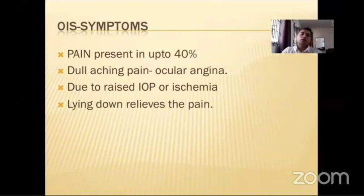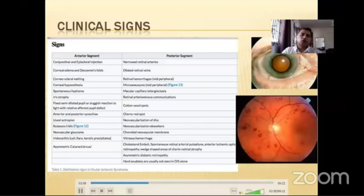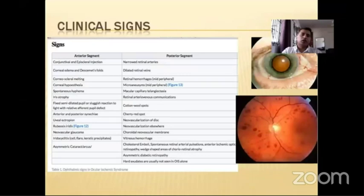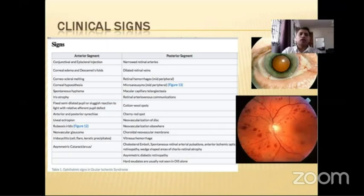Patients may also have central, centrocecal, or paracentral scotomas. Most patients present with dull aching ocular pain — 'ocular angina' — due to severe ischemia of the eye and periorbital tissues, sometimes due to elevated IOP. Lying down may relieve or reduce the severity of pain. Anterior segment examination may show corneal edema, conjunctival and episcleral injection, Descemet's folds, corneoscleral melting, iris atrophy, and rubiosis iridis in more than 50% of patients, along with fixed semi-dilated pupil and uveitis.